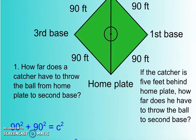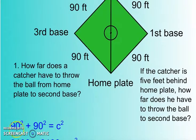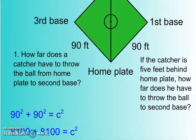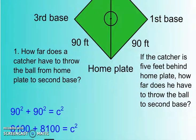First step, we need to plug in the 90 feet for each of the legs, so 90 squared plus 90 squared. And 90 squared is 8,100, so we plug that in for both of them. Then we need to add them together, so 8,100 plus 8,100 is 16,200.